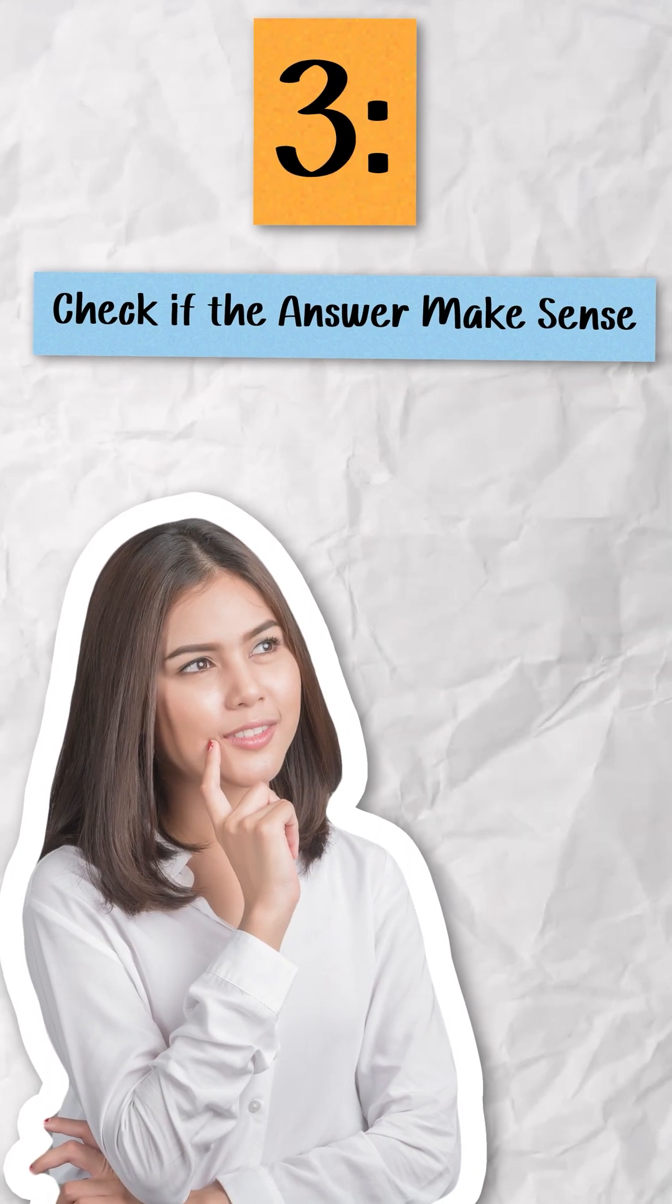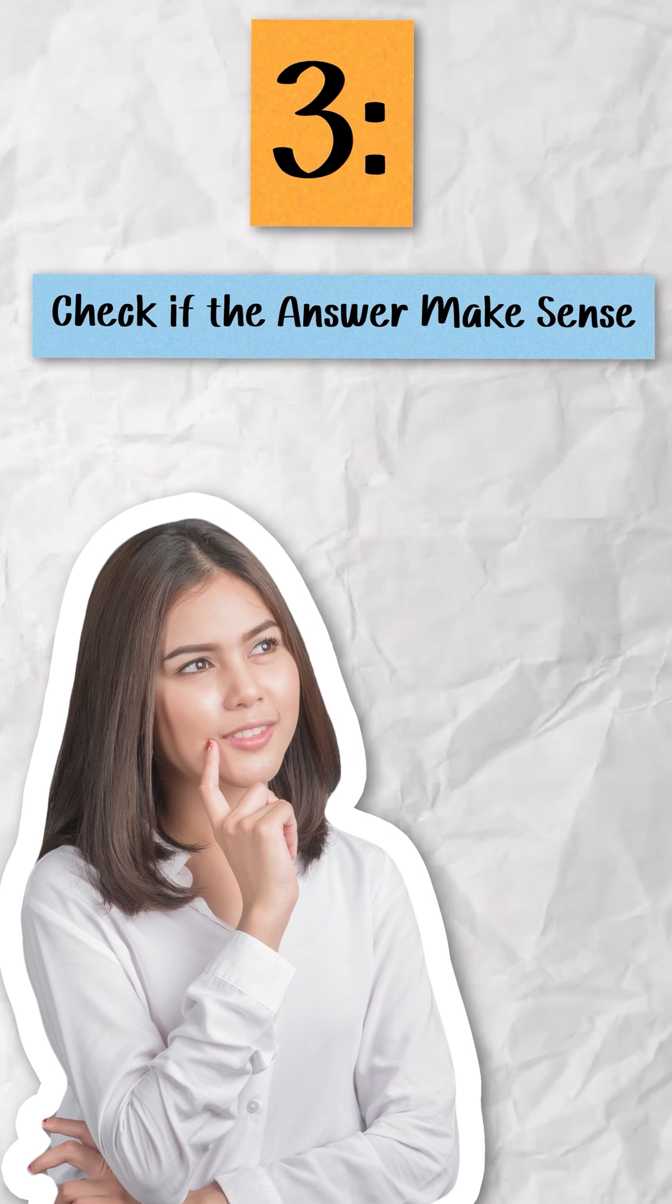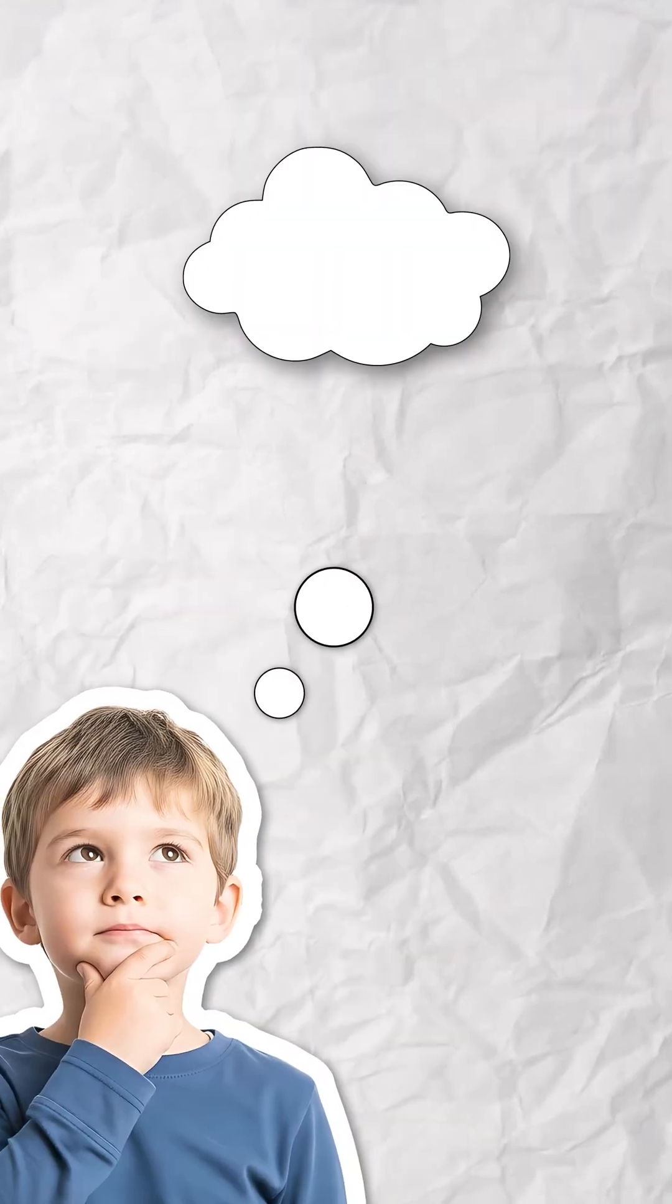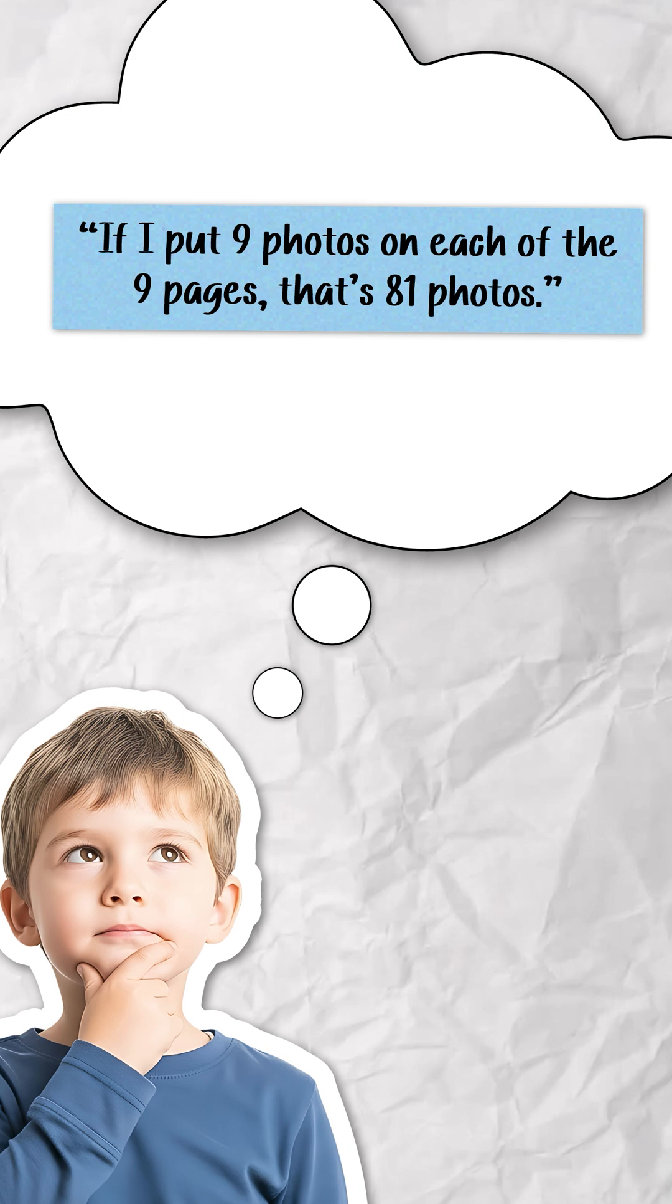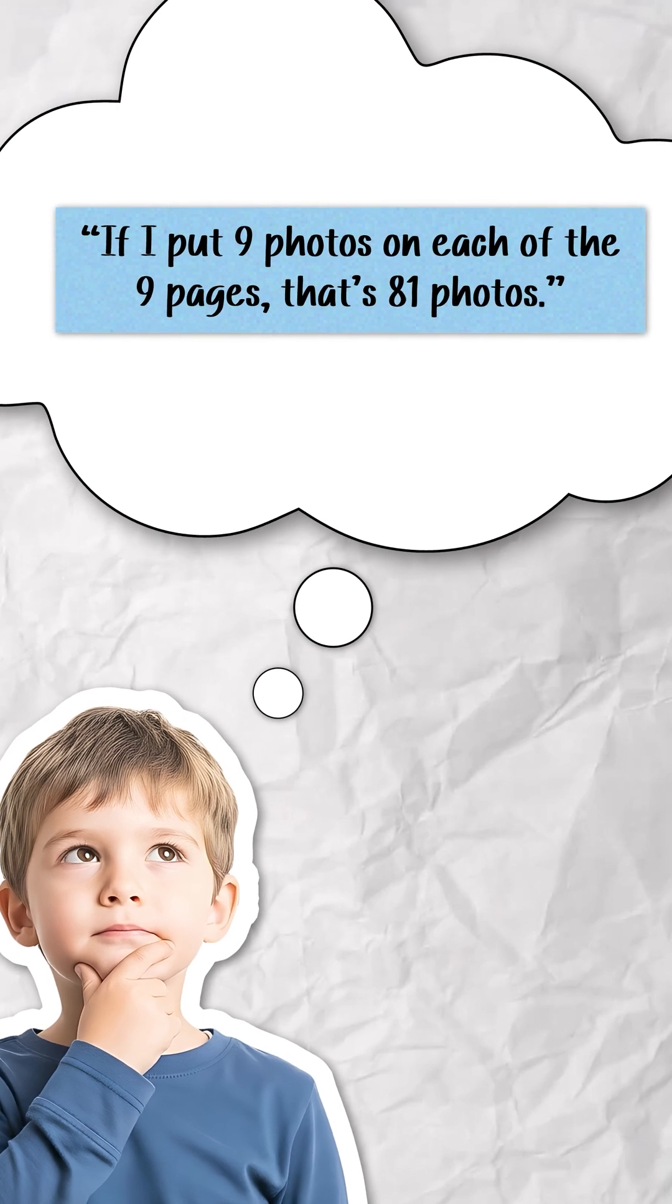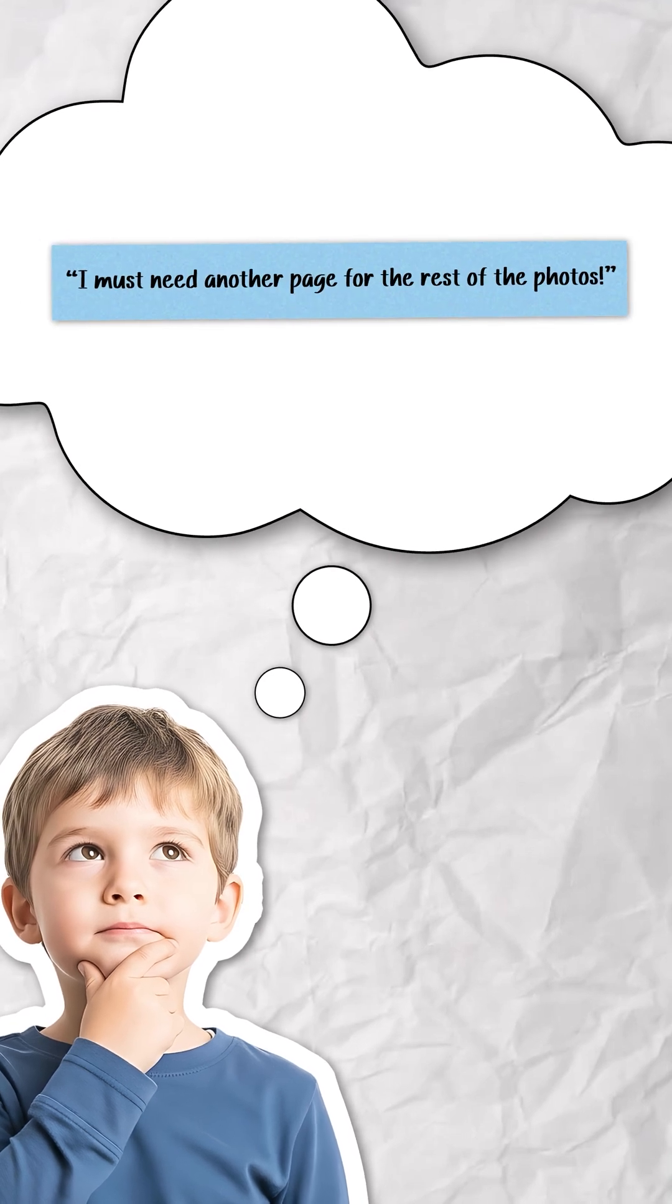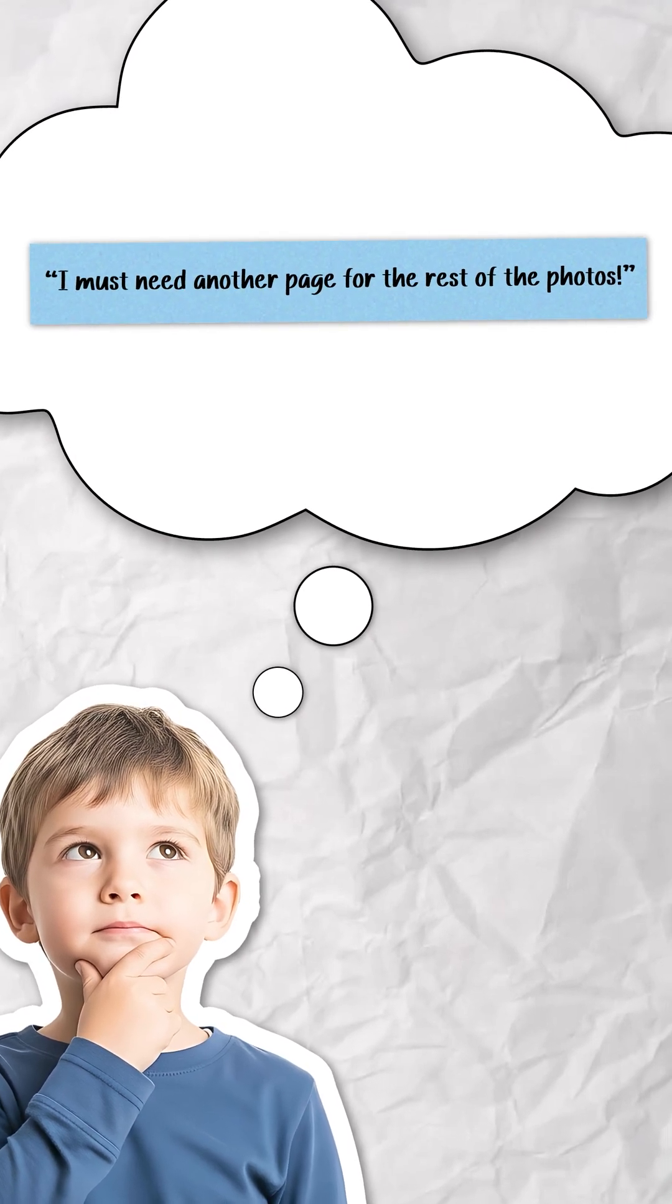Make sure the answer makes sense. This sounds super simple, but it's more than just doing the reverse operation. It's about thinking critically. If they solve the problem and answer 9 pages, they might stop and think, if I put 9 photos on each of the 9 pages, that's 81 photos. But, there are 88 photos, this can't be right. This is the moment we want students to pause and reflect, and adjust their solution if things don't look right.